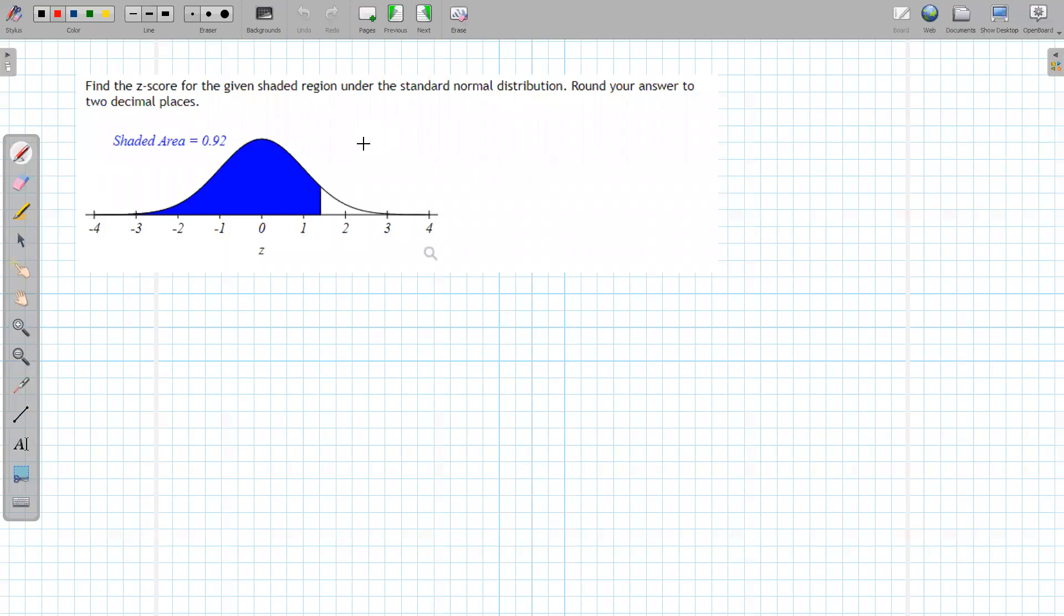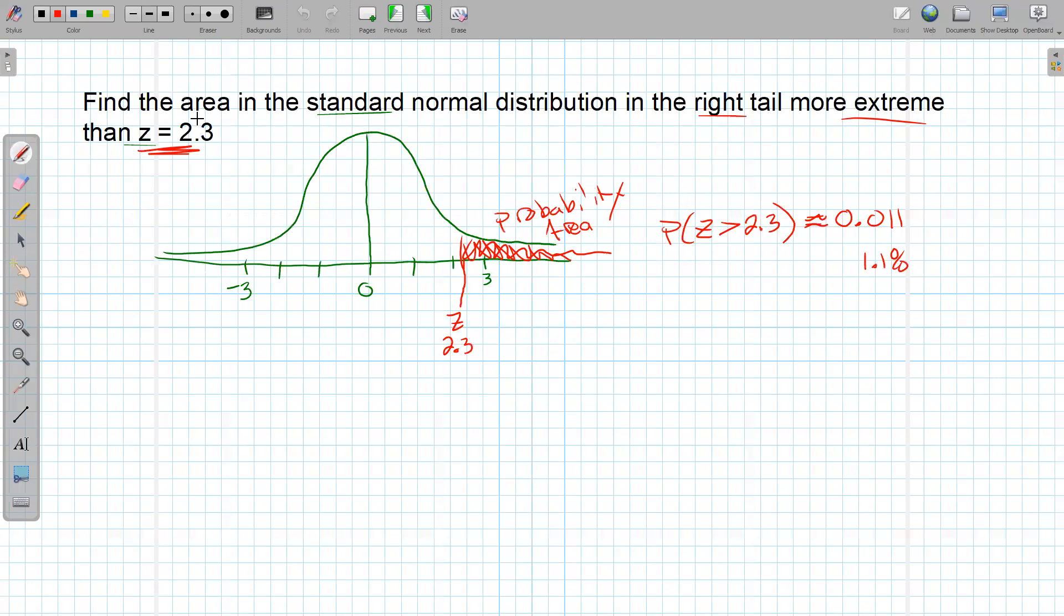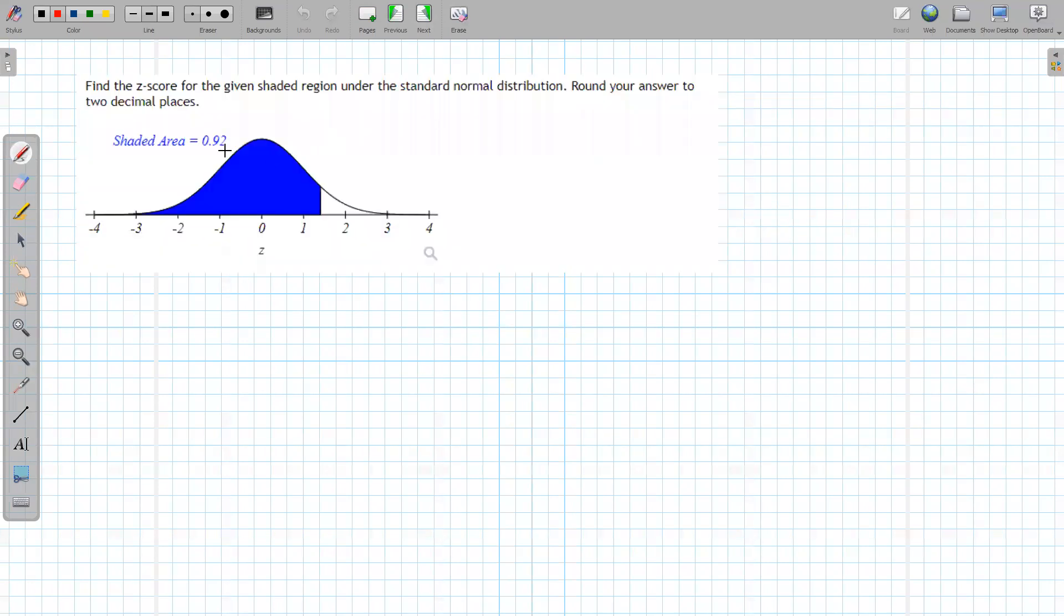This is a little backwards of the other problems we were looking at. So here I was given the z-score and I found the area or probability. This one gives me the area or probability and says, hey, can you go find the z-score?